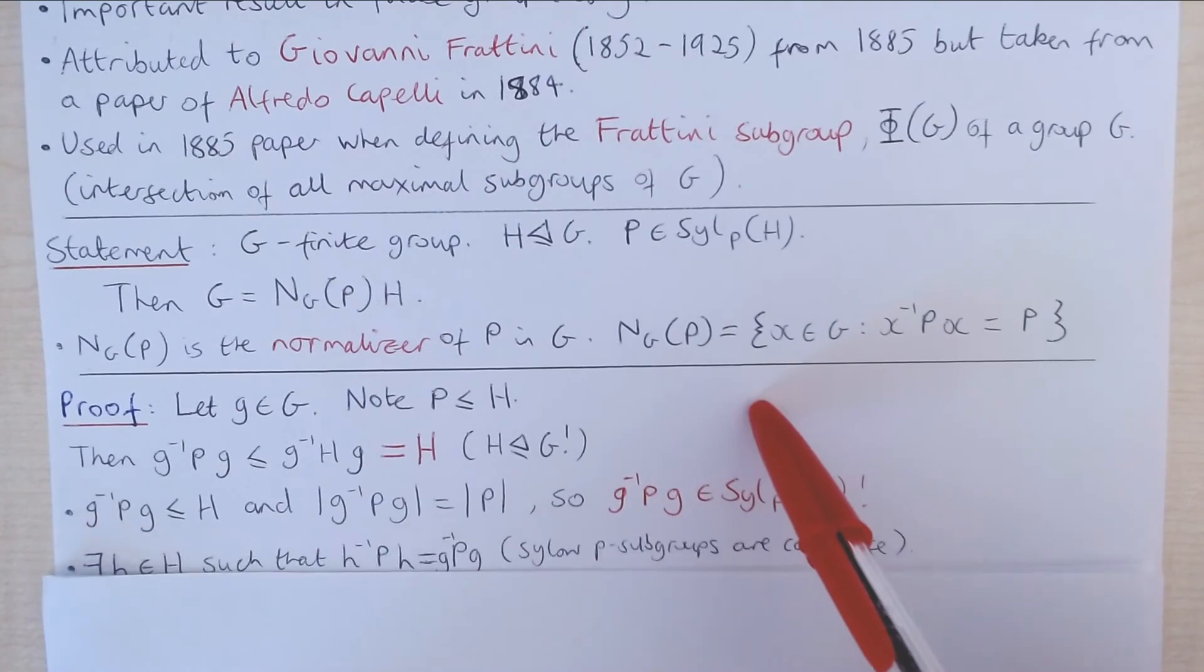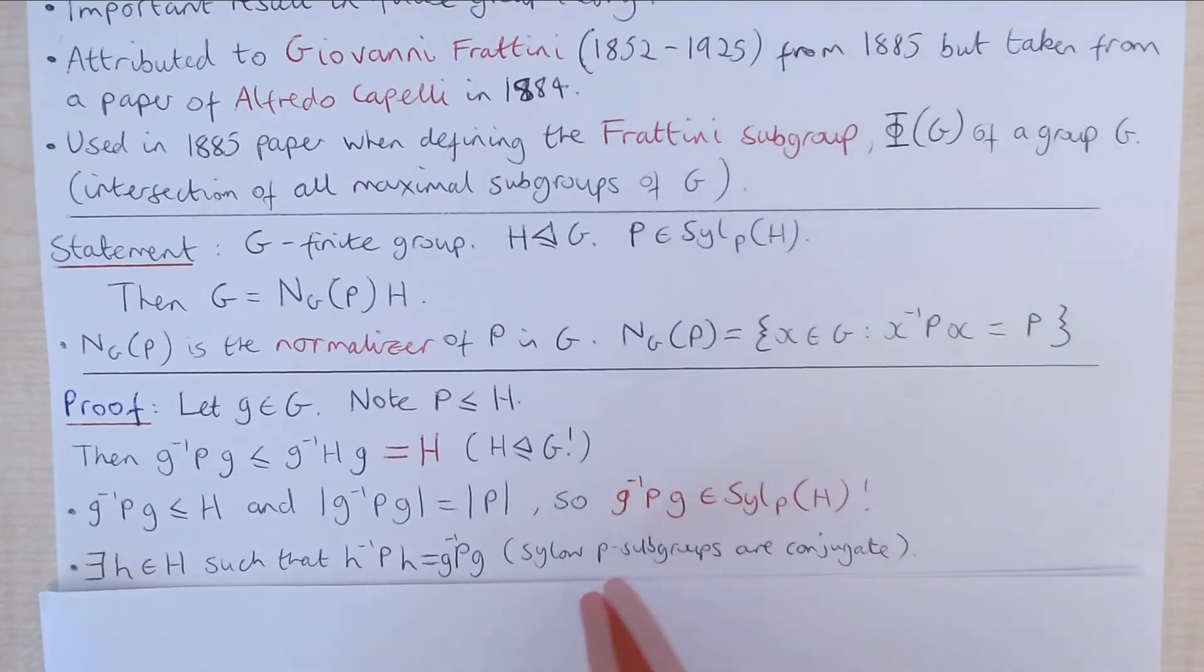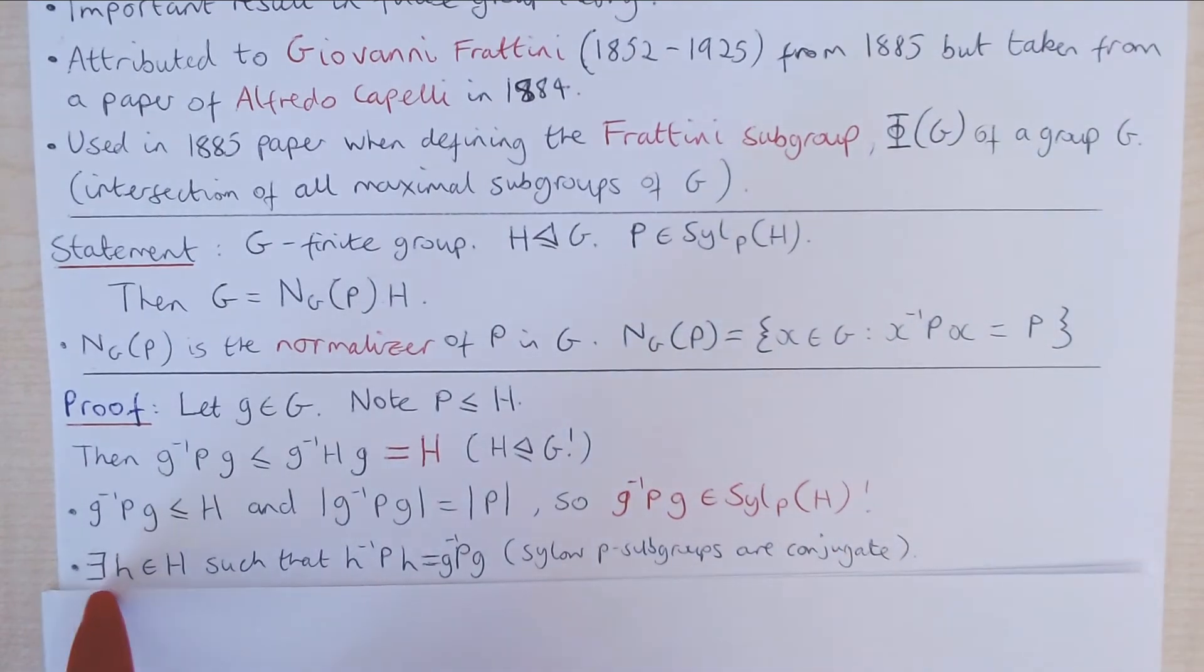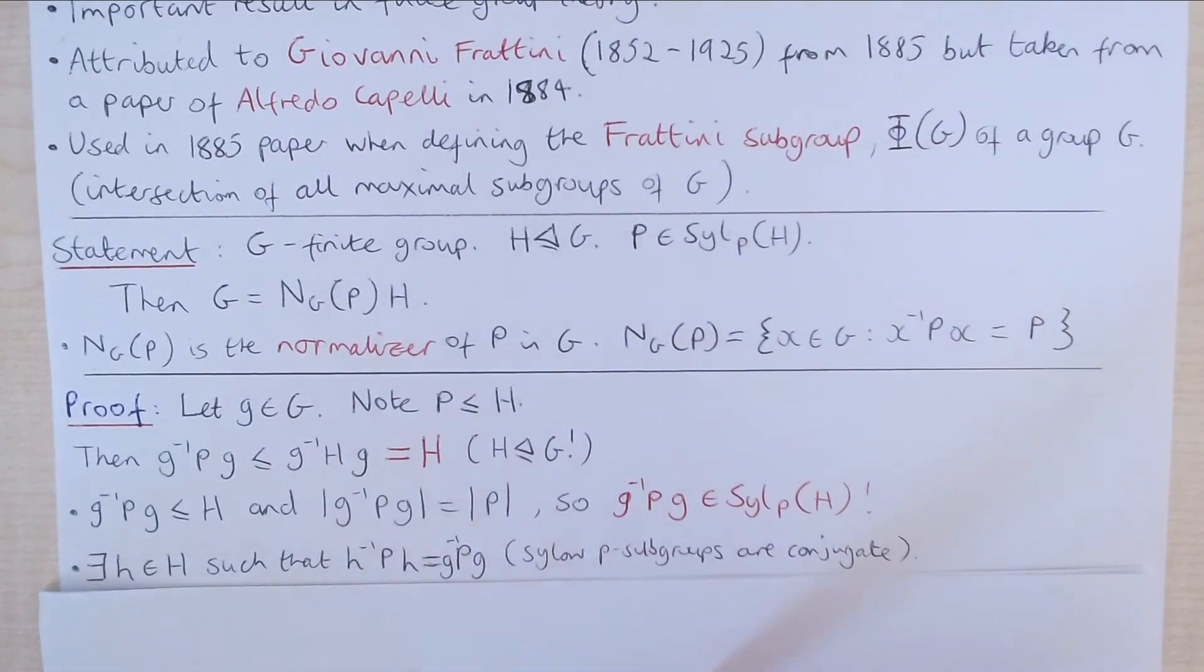And now we can turn to Sylow theory, noting that any two Sylow P subgroups of a group are conjugate within that group, to give us that there has to exist an element H in H such that H inverse P H equals this Sylow P subgroup of H.